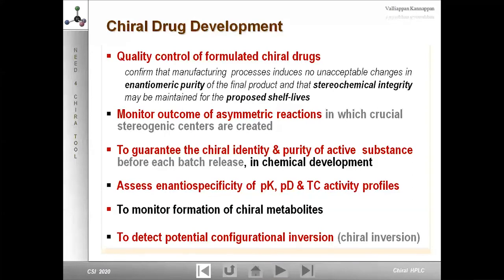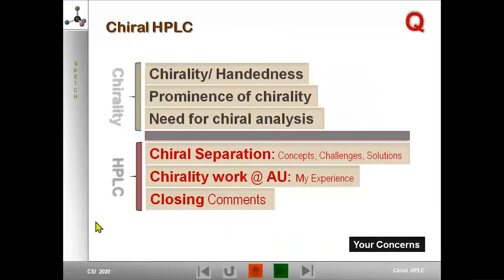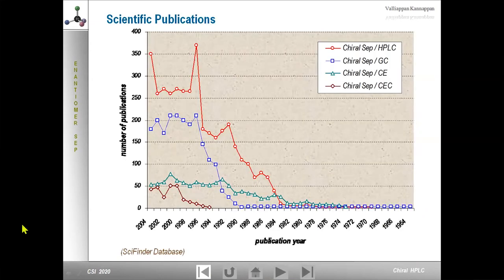There are three options to create a chiral environment. First, the analyte can be derivatized using a chiral derivatizing agent — called indirect enantioseparation. The analyte is derivatized with an enantiopure chiral derivatizing agent to form a pair of covalent diastereomers that can be separated on a regular HPLC column. Second, attach a chiral element or selector to the stationary phase — chiral stationary phases. Third, incorporate a chiral element into the mobile phase — chiral mobile phase additive.